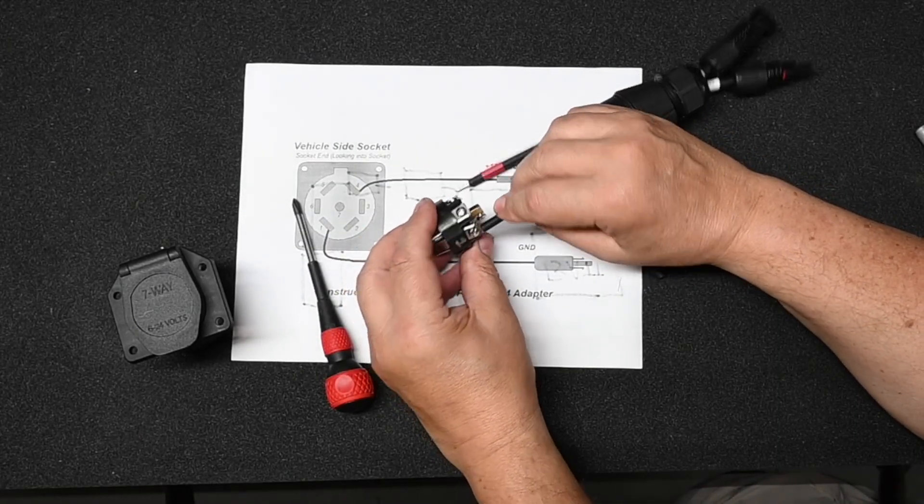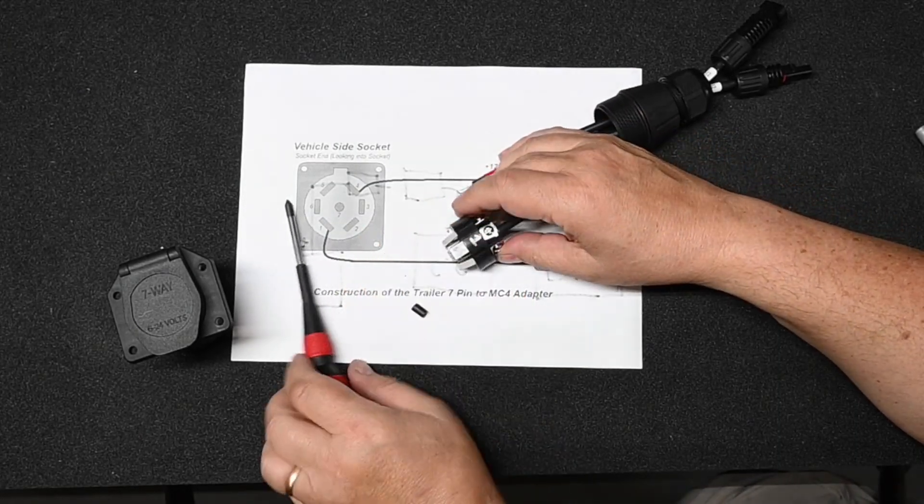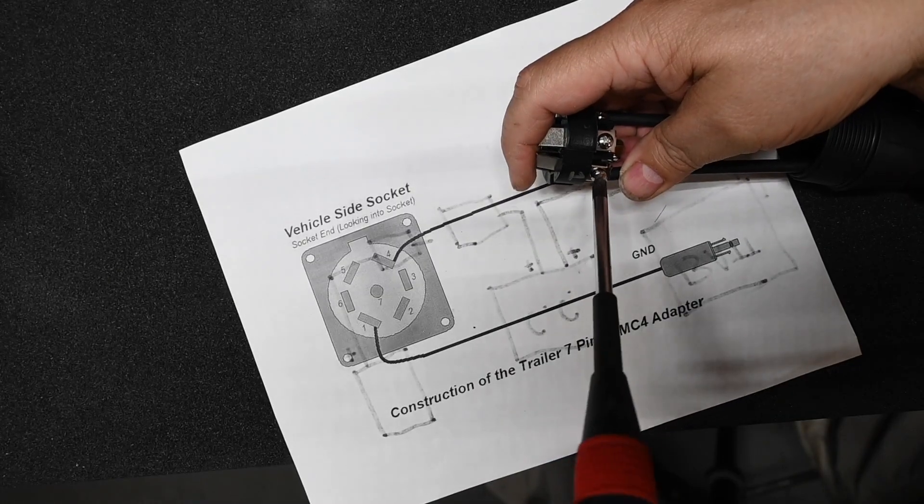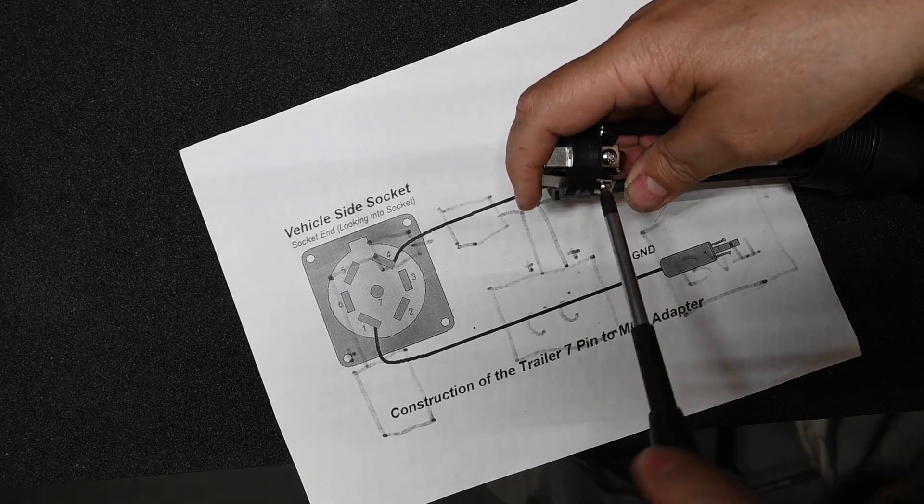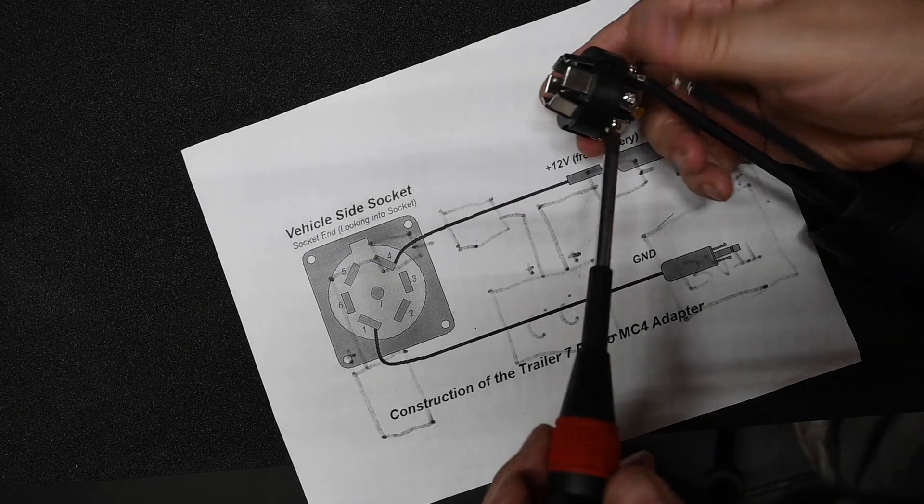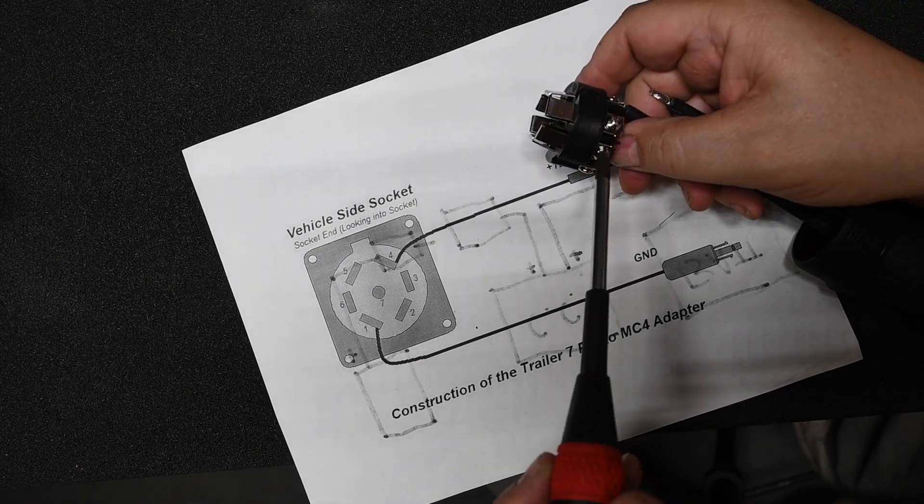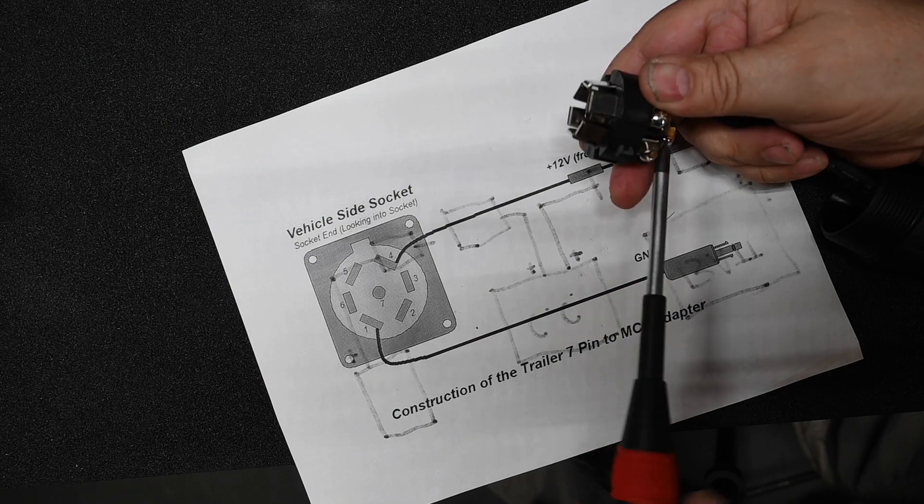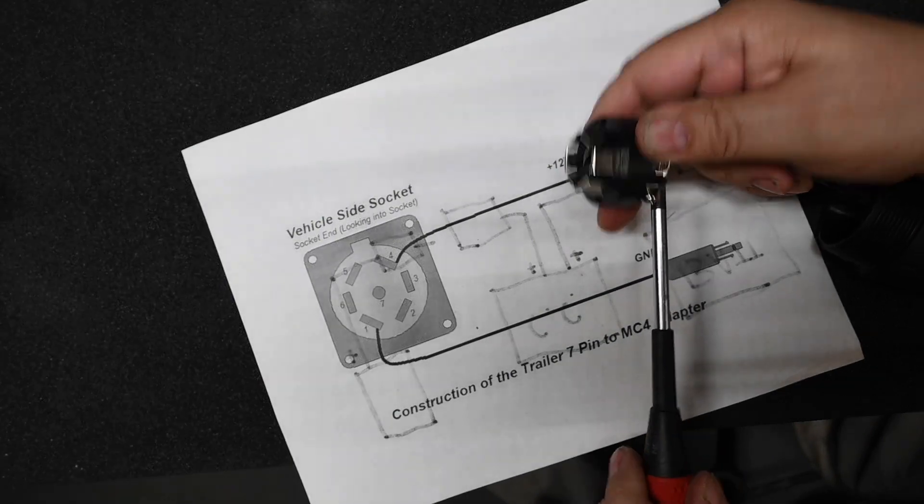And then it's just a matter of connecting the wire to the proper terminal. And then we'll also connect terminal one. And it's also a good idea to go around the remaining terminals and make sure they're tightened down, because you don't want them to loosen up and rattle around inside.